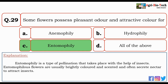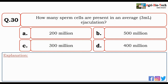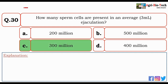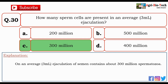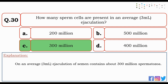The last question of this part: how many sperm cells are present in an average 3 ml ejaculation? Options: 200 million, 500 million, 300 million, or 400 million. The correct answer is C — 300 million. On average, a 3 ml ejaculation of semen contains about 300 million spermatozoa.